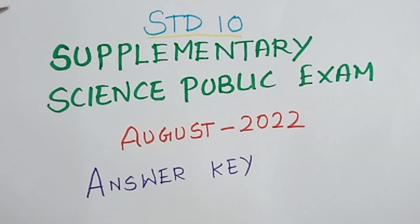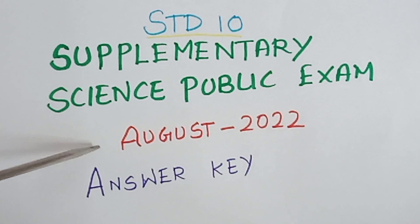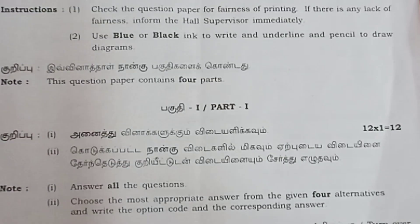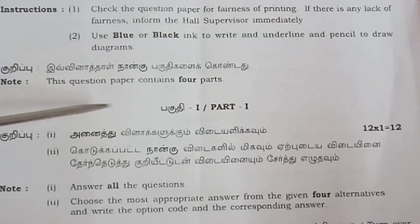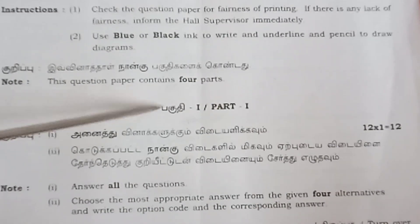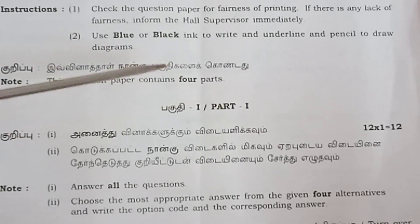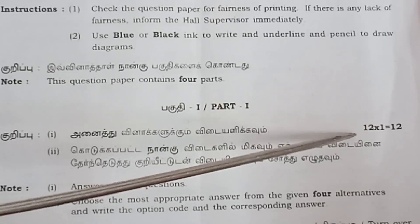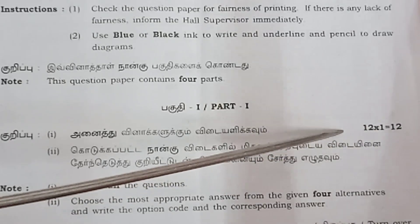Standard 10th Science Supplementary Public Exam August 2022 answer key. Total marks: 75. Part 1: 12 questions, 1 mark each, equals 12 marks.